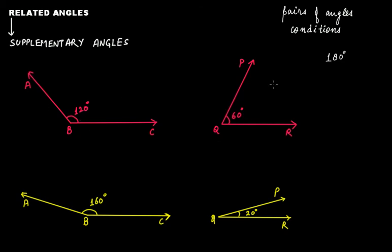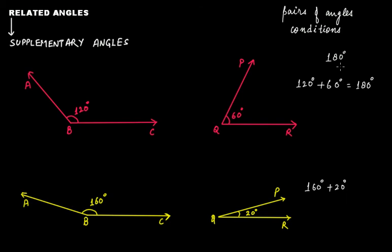Angle ABC is 120 degrees and angle PQR is 60 degrees. If we add these two angles we get 180 degrees — that makes them supplementary angles. Therefore this pair of angles is supplementary, and angle ABC and angle PQR are supplement to each other.